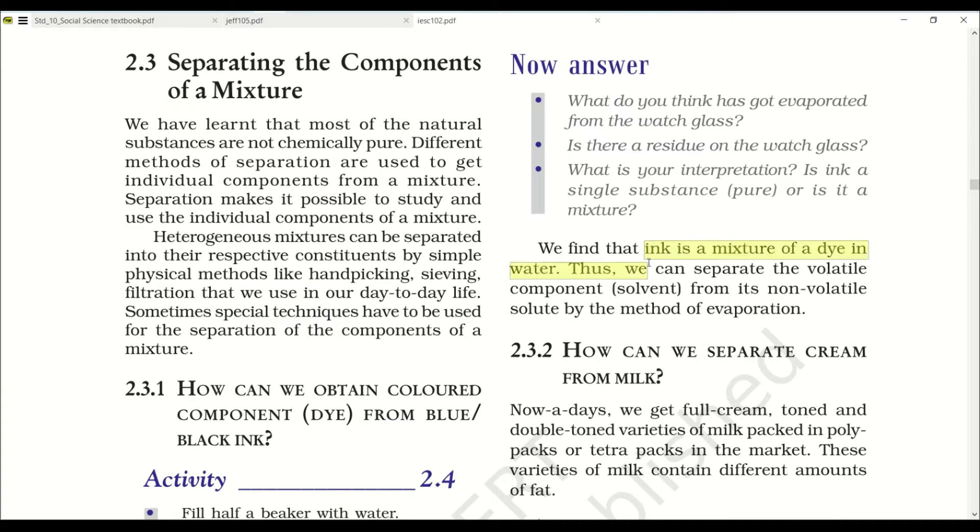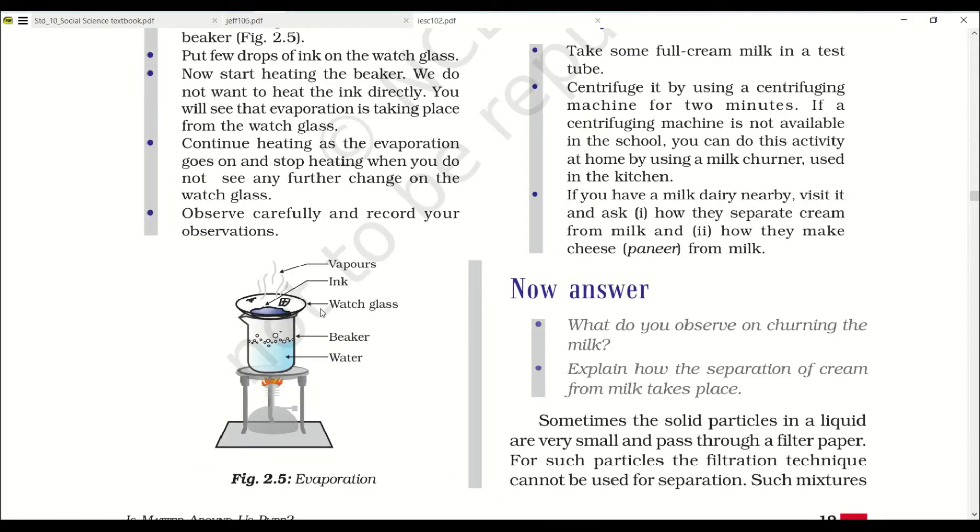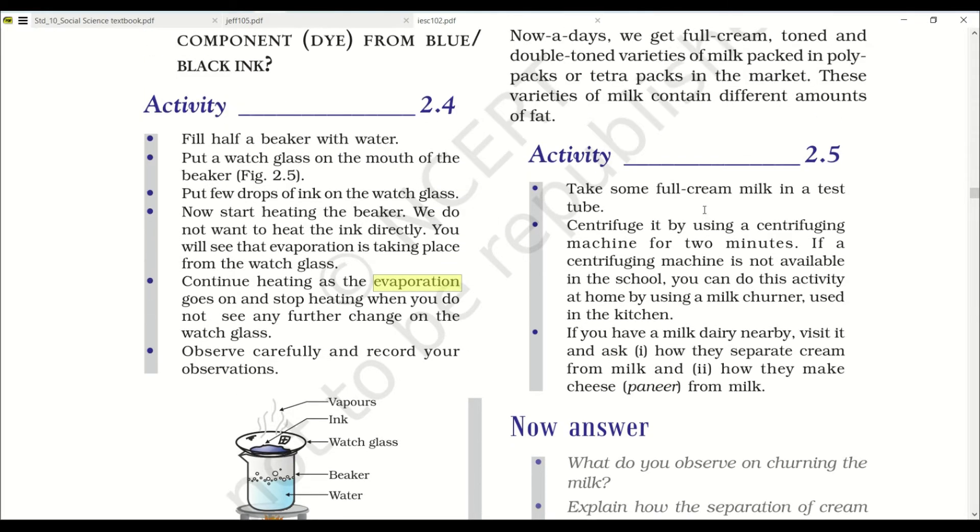We can find that ink is a mixture of water and dye. Thus we can separate the volatile component, that is the solvent water, from its non-volatile solute by the method of evaporation. Volatile substances are those which evaporate on giving heat, and non-volatile substances do not evaporate though heat may be given to it. Now let's go through another topic.